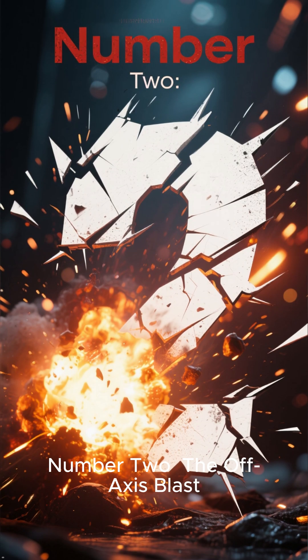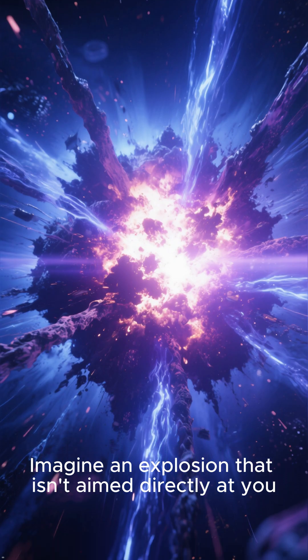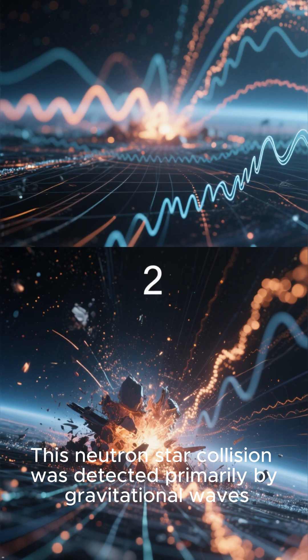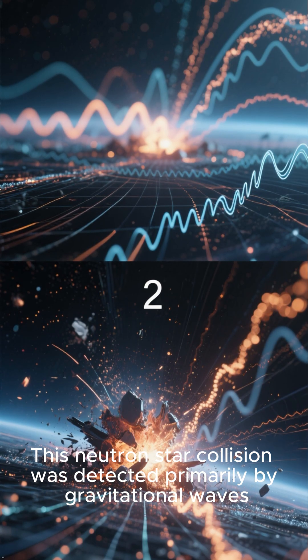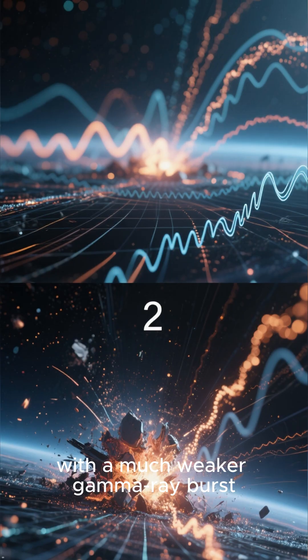Number 2. The Off-Axis Blast. Imagine an explosion that isn't aimed directly at you. This neutron star collision was detected primarily by gravitational waves, with a much weaker gamma ray burst.